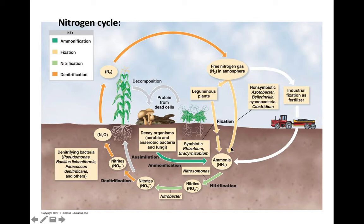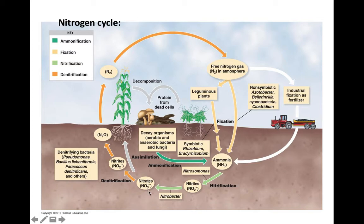That was stage one of the nitrogen cycle. Stage two, if we're looking at soil — maybe fields — there are other soil-living bacteria that will take the ammonia and convert it to nitrites and then to nitrates. This process is called nitrification. Just like nitrogen fixation, if we're farmers we want nitrification to occur, because nitrates are a wonderful source of nitrogen for plants. If we have nitrogen fixation and nitrification going on, our crops are going to grow really, really well.